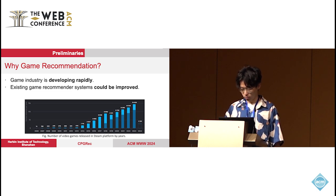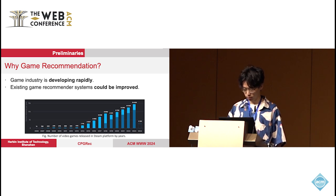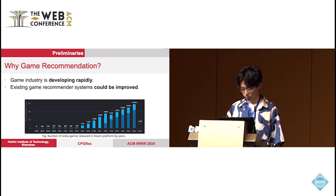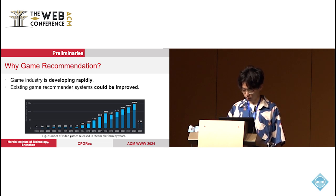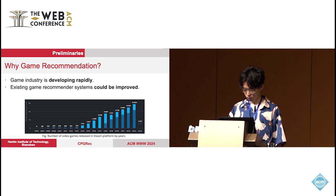We jump straight into the main reasons why we chose to solve problems in game recommendation scenarios. We list the number of video games released on the Steam platform by year in a bar chart. As we can see, the number of released games is increasing year by year and has grown 33 times in the past 10 years. This proves the huge potential of the video game market. On the other hand, existing game recommender systems could still be improved in terms of both accuracy and diversity, and the immaturity of research in this area means there is huge room for improvement.